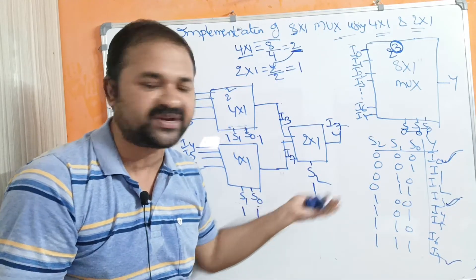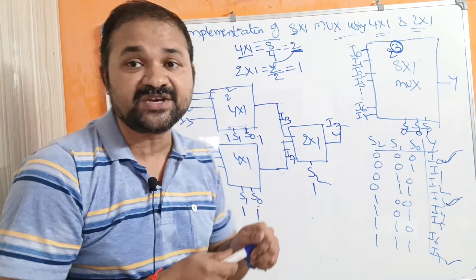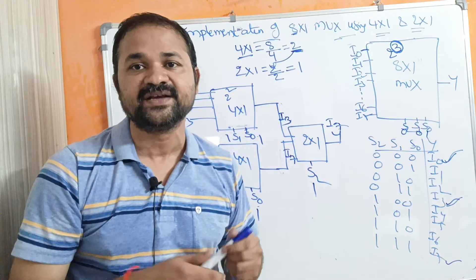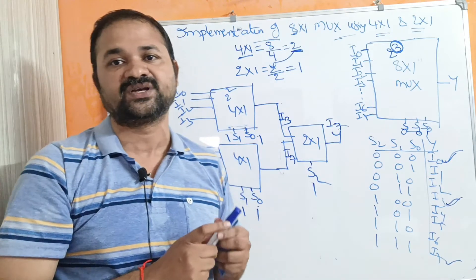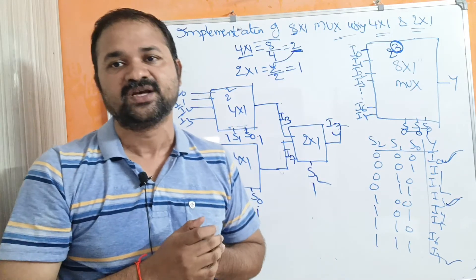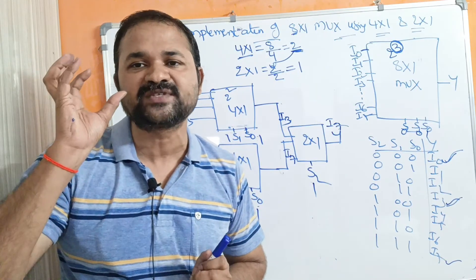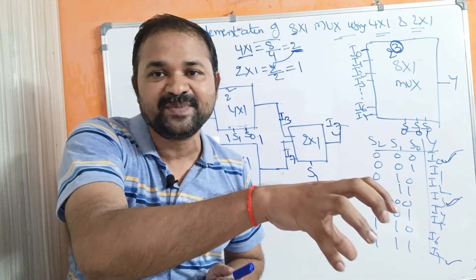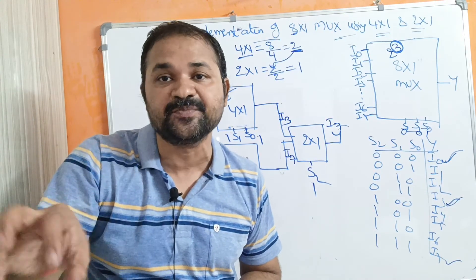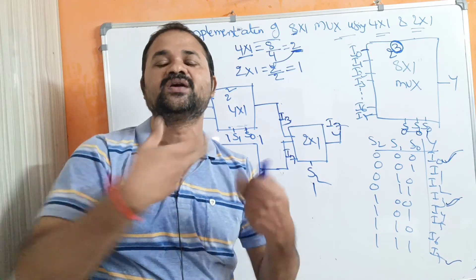This is about the implementation of an 8 by 1 multiplexer using 4 by 1 and 2 by 1 multiplexers. We require two 4 by 1 multiplexers and one 2 by 1 multiplexer. The 8 by 1 multiplexer accepts eight data input lines and produces one output. Which data input is displayed as the output is decided by the selection or control inputs S2, S1, and S0.